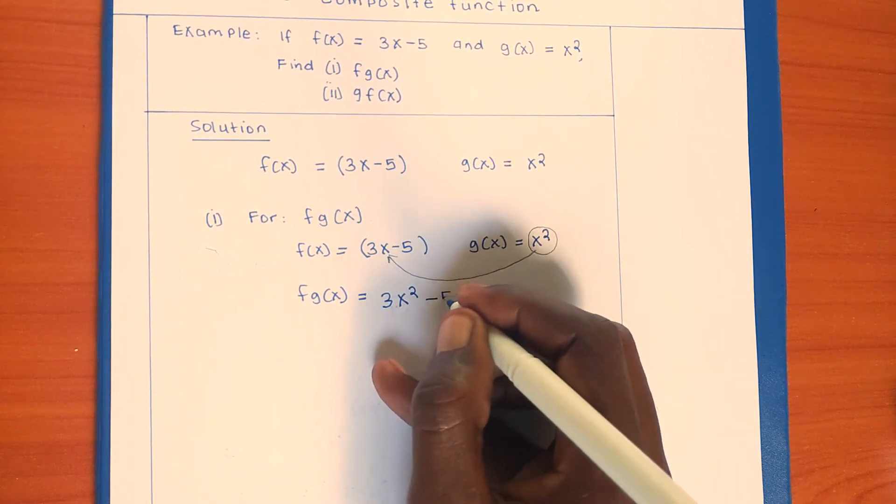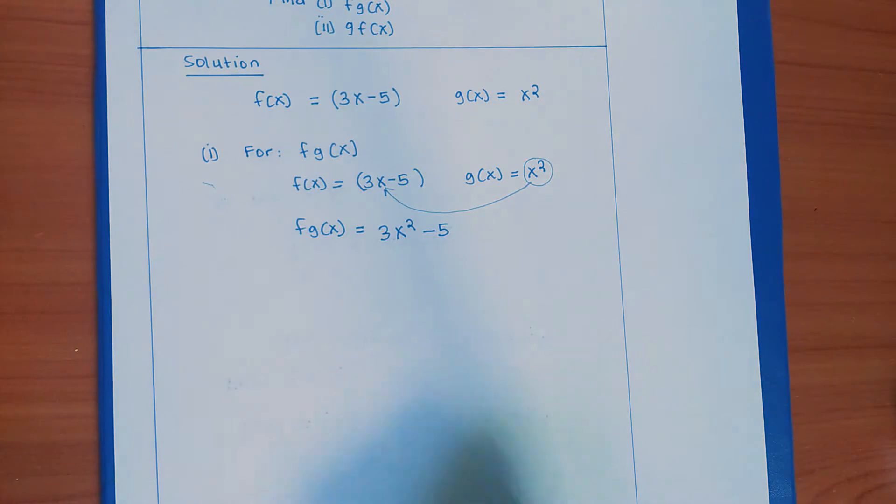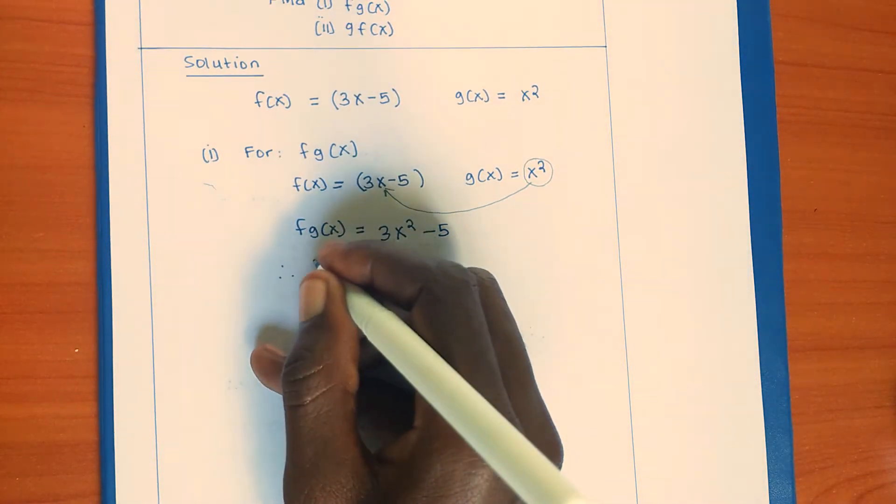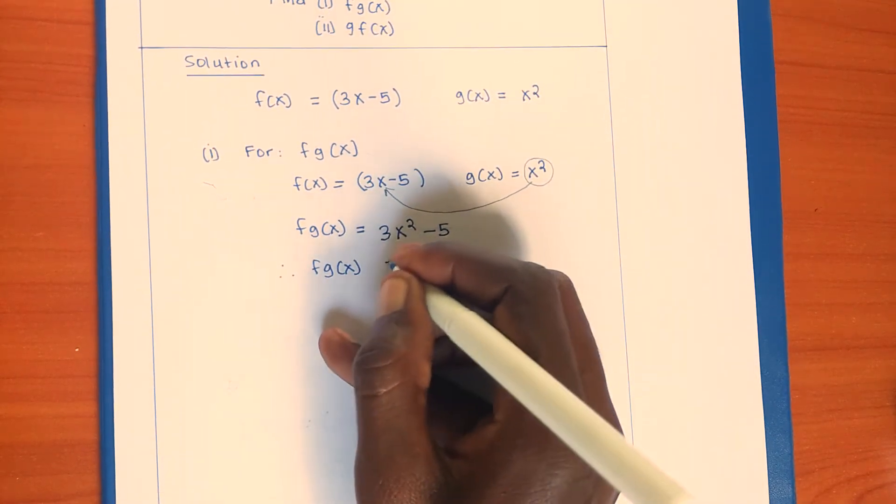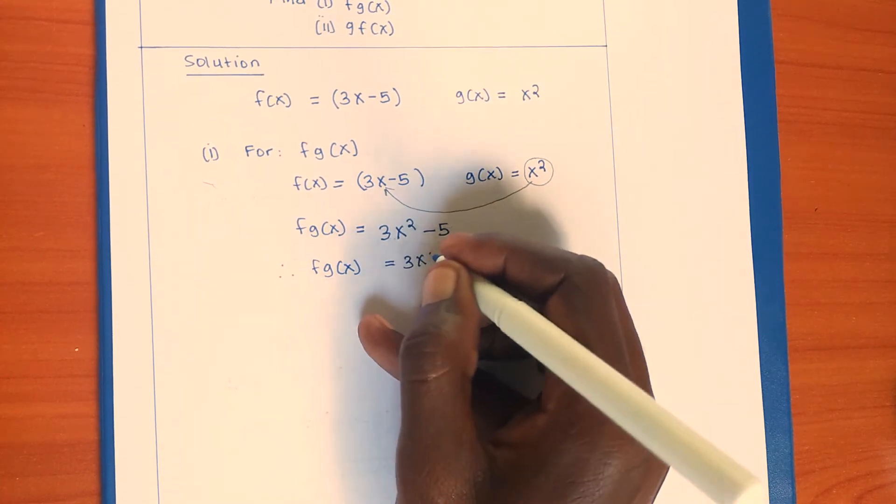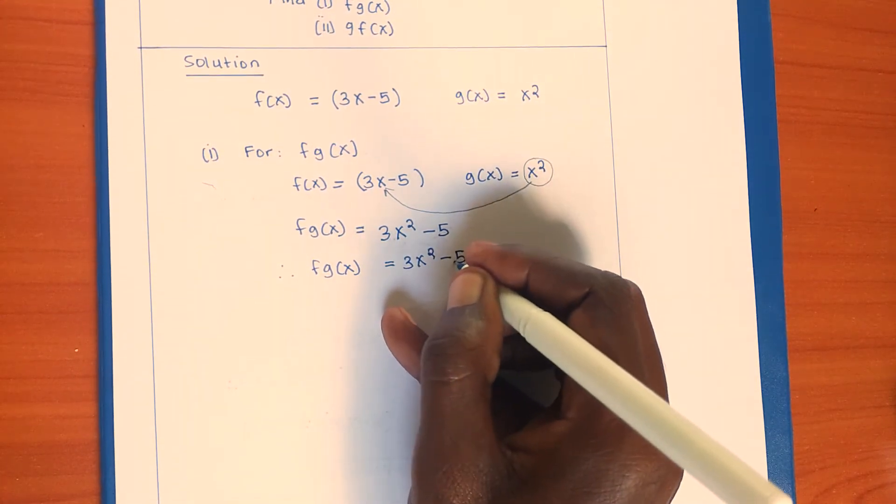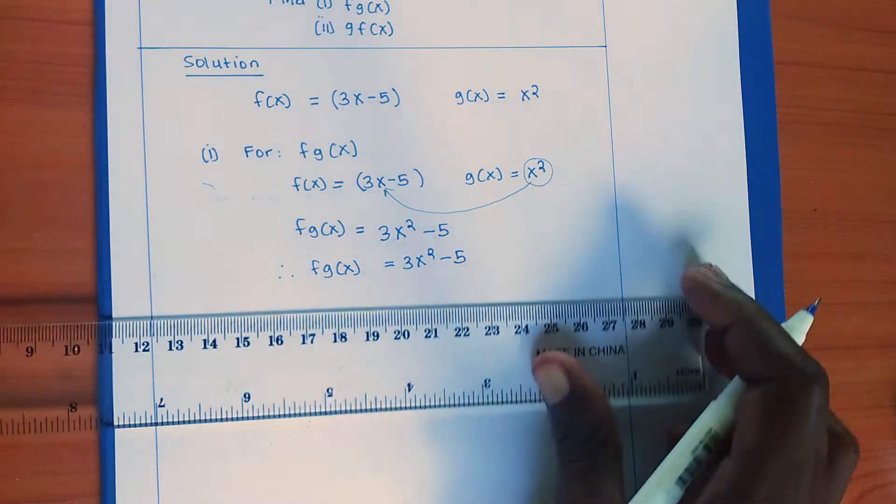Minus 5. Therefore, fg(x) is equal to 3x² - 5. As simple as that.